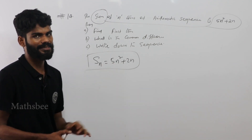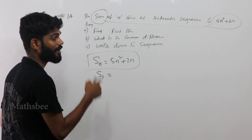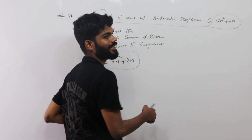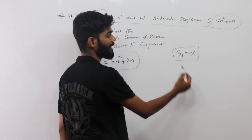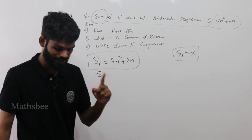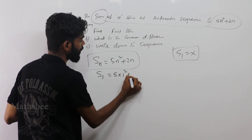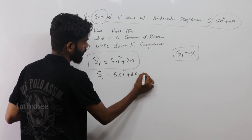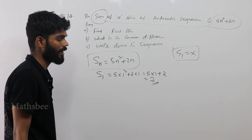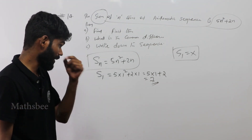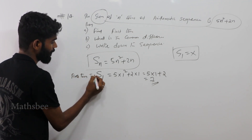Using the sum formula: S1 is the sum of 1 term, which equals the first term. So S1 equals 5 into 1 squared plus 2 into 1, which is 5 plus 2 equals 7. Therefore the first term is 7.